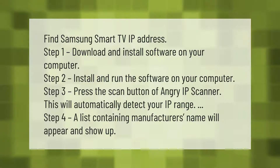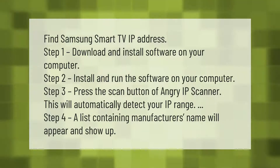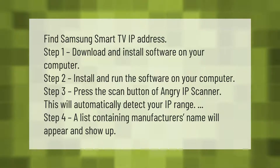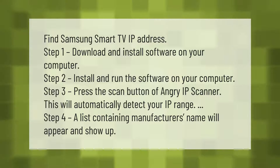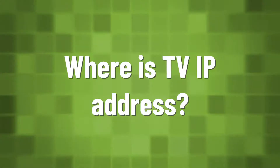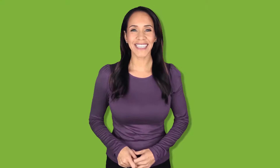Find Samsung smart TV IP address. Step 1: Download and install software on your computer. Step 2: Install and run the software. Step 3: Press the scan button of Angry IP Scanner — this will automatically detect your IP range. Step 4: A list containing the manufacturer's name will appear.